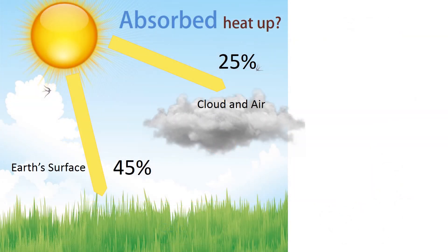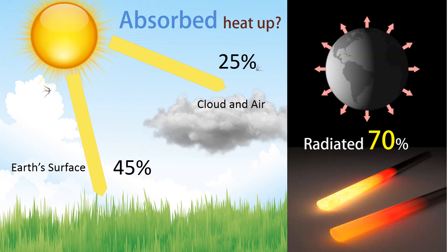The question that comes to mind is: if the earth keeps absorbing heat, will it not get very hot? And the answer is no, because the earth radiates heat — like a hot iron bar radiates heat. Similarly, as the earth gets hot, it radiates heat and maintains the energy balance.